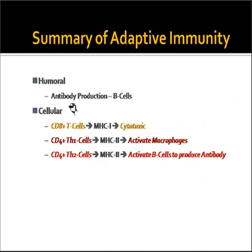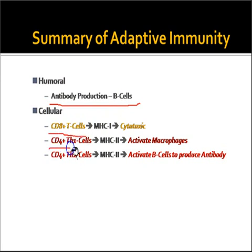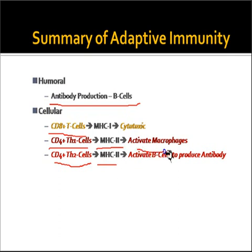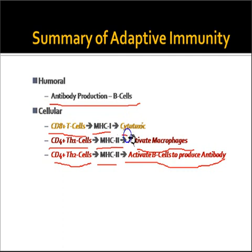In summary of adaptive immunity: humoral immunity is mediated by antibody production through B cells, whereas cellular mediated immunity is primarily mediated by CD8+ T cells and helper T cells of two types — TH1 and TH2 — which form complexes with MHC class 2 molecules working on exogenous antigens. TH1 cells activate macrophages, TH2 cells activate B cells to produce antibodies, and CD8+ cytotoxic T cells work with MHC class 1 to produce cytotoxic effects and directly kill infected cells.